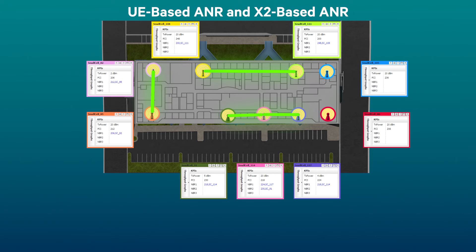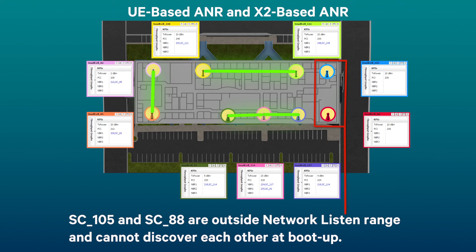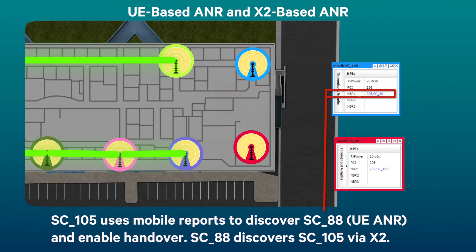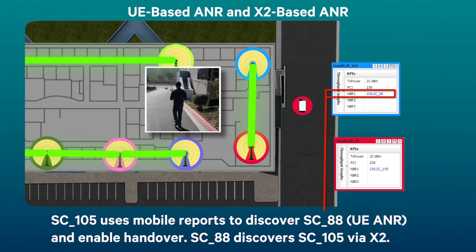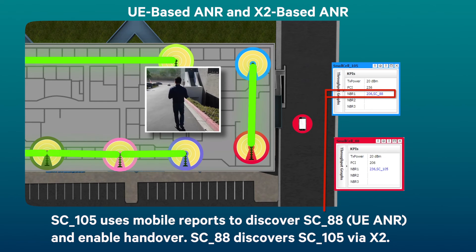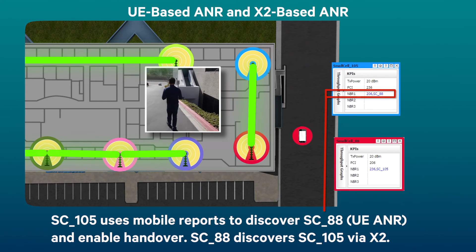Small cells 105 and 88 are outside of each other's network listen range and did not discover each other at boot up. Small cell 105 discovers 88 through mobile reports, while small cell 88 discovers 105 through X2. This enables handover between them.